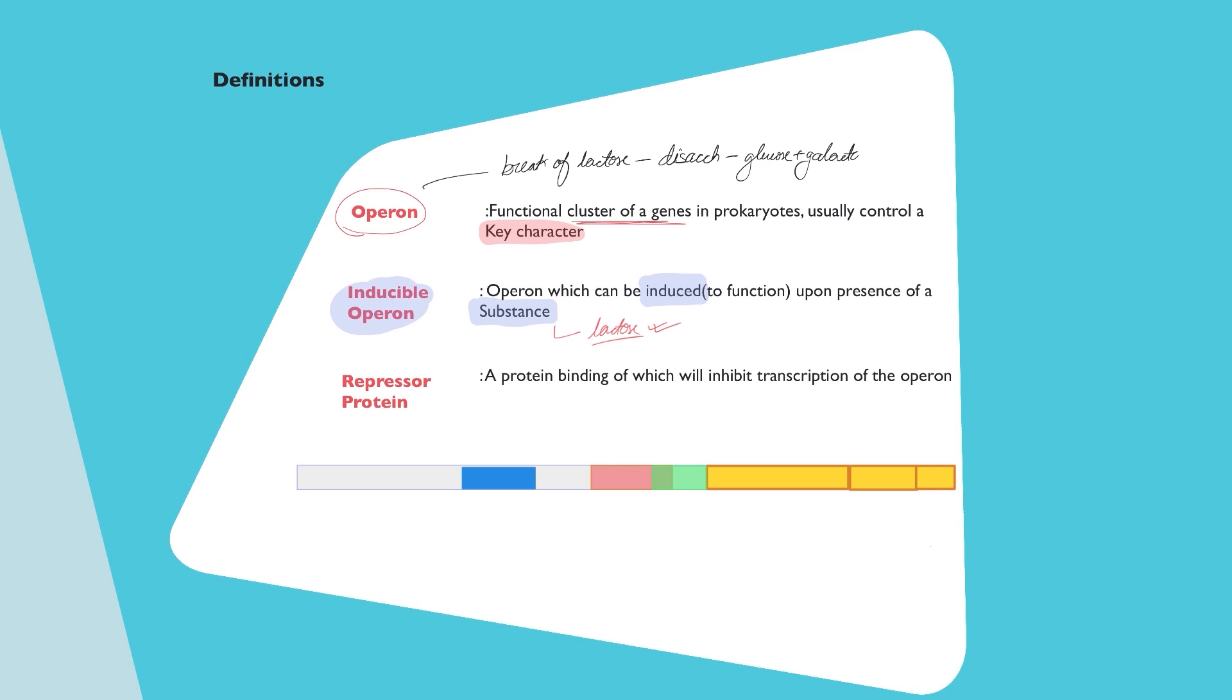Now, there has to be a repressor protein. What's a repressor protein? It is going to make a protein that will inhibit transcription of the operon and hence the lactose breakdown will not occur.